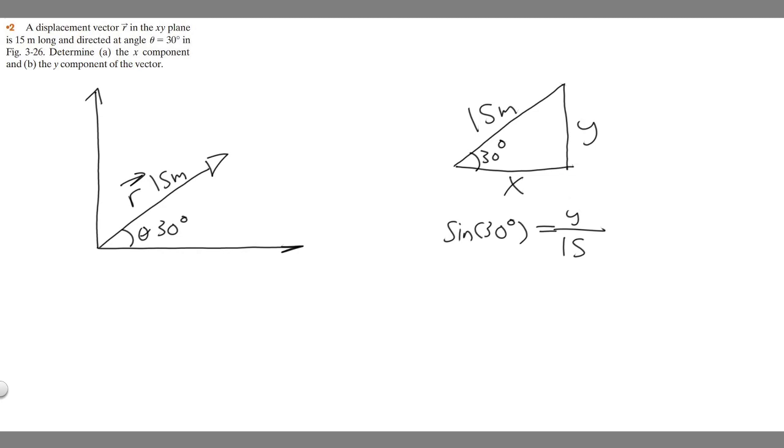If we want to solve for this length right here, which is our y component, we just multiply both sides by 15. So 15 is going to be equal, or y will equal 15 times the sine of 30. And so if you go ahead and do this, you're going to get y equals 7.5. And keep in mind the units. What are the units? We're using meters. So y equals 7.5 meters. So that's going to be the y component.